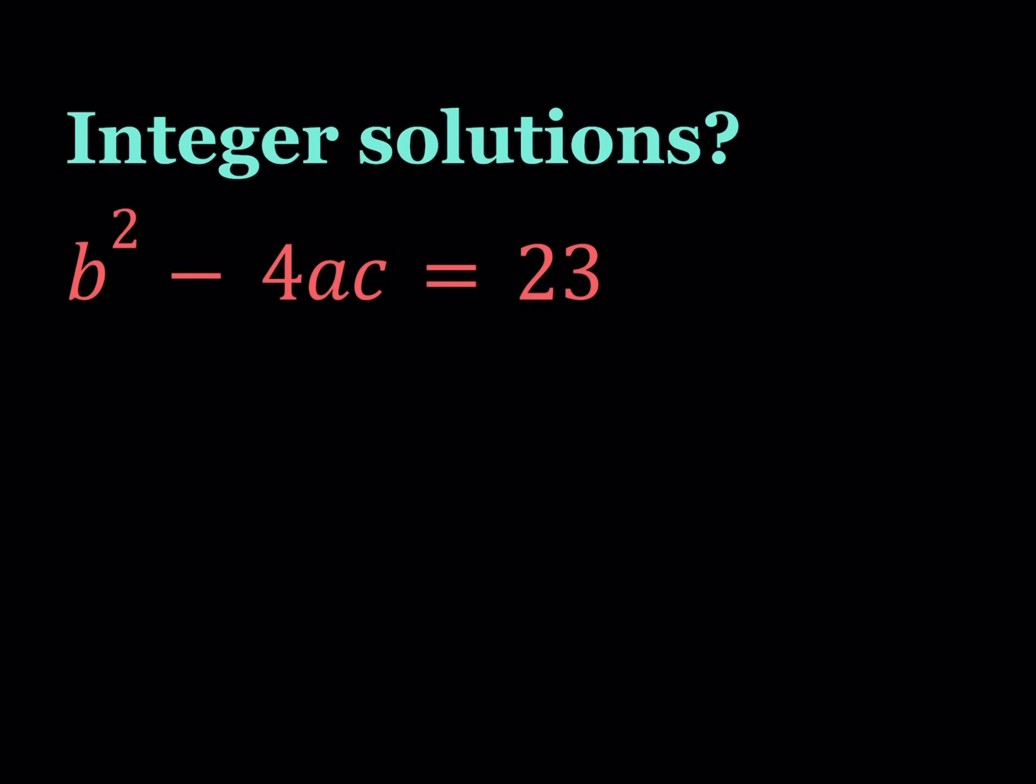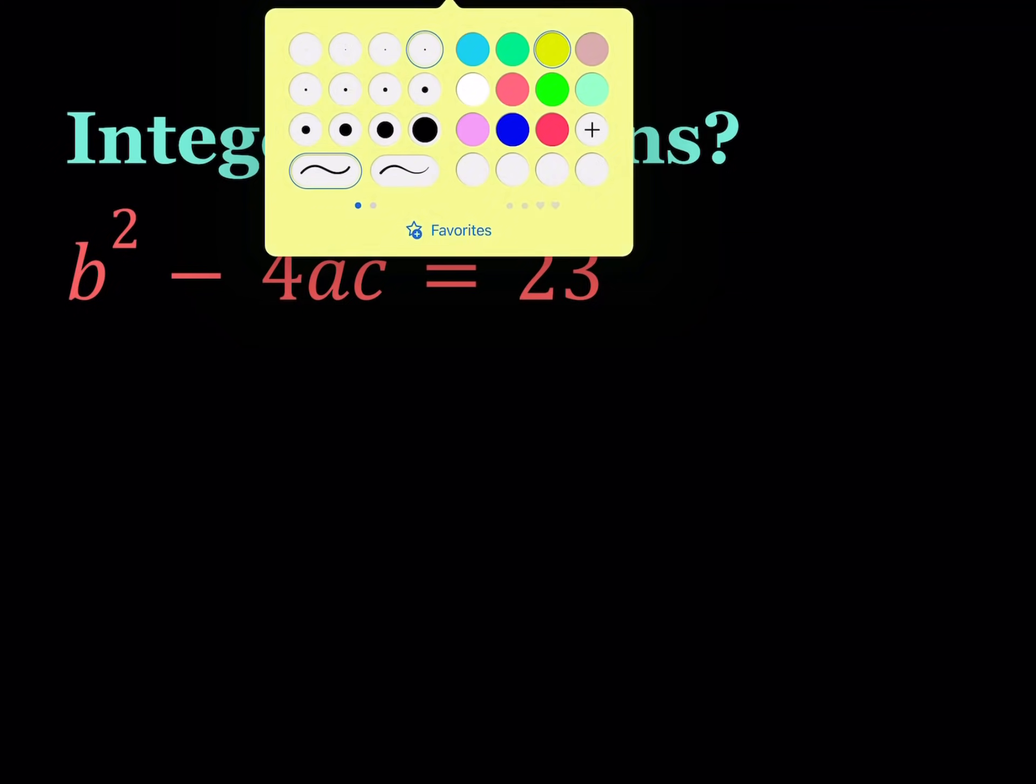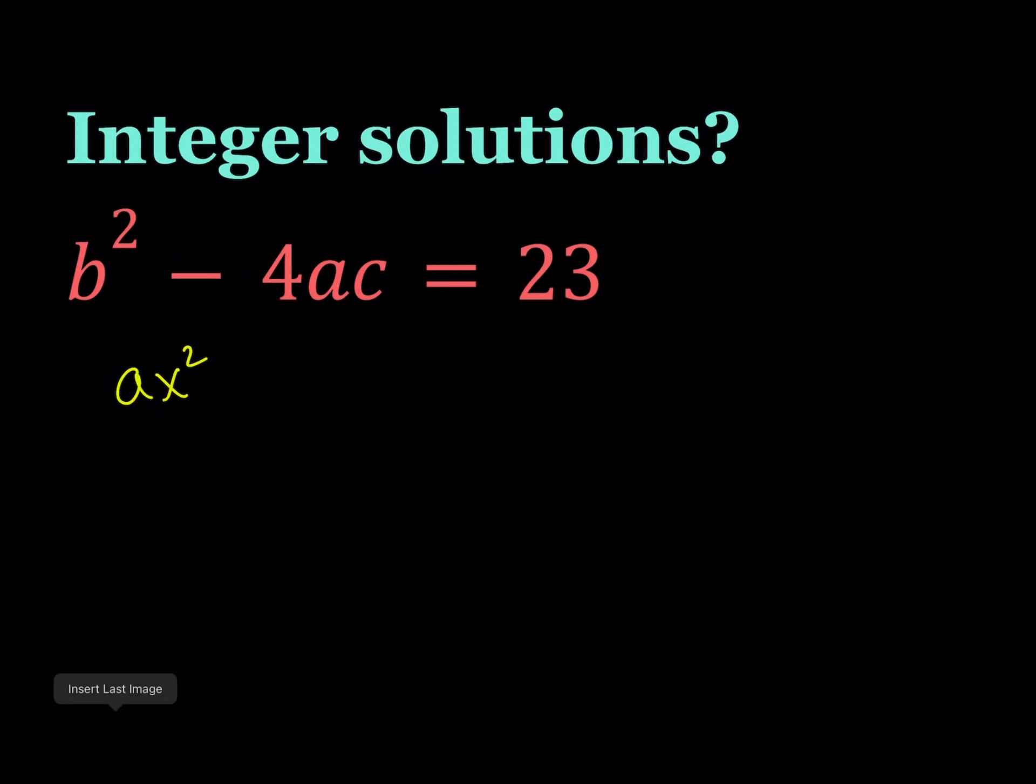Let's go ahead and take a look at this equation. Now this equation should look familiar to you because I kind of modified the original problem a little bit. Originally it's asking for the discriminant of a quadratic equation. If you have a quadratic equation ax squared plus bx plus c equals 0, you know that its discriminant, also known as delta, can be written as b squared minus 4ac.